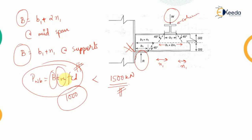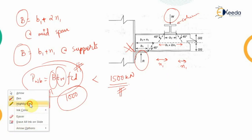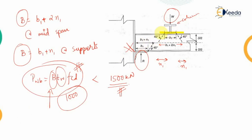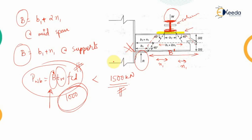If the calculated PWB — say 1000 kN — is less than the externally applied load of 1500 kN, we need to increase the capacity. Since Tw cannot be changed for an existing beam section, we increase the load transfer width b by providing a stiffener or bearing plate below the I-section. This increases the effective width b', increasing PWB until it exceeds the externally applied load.